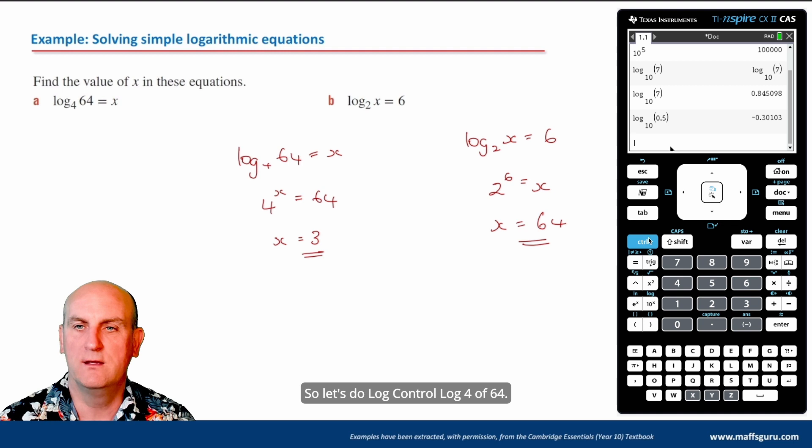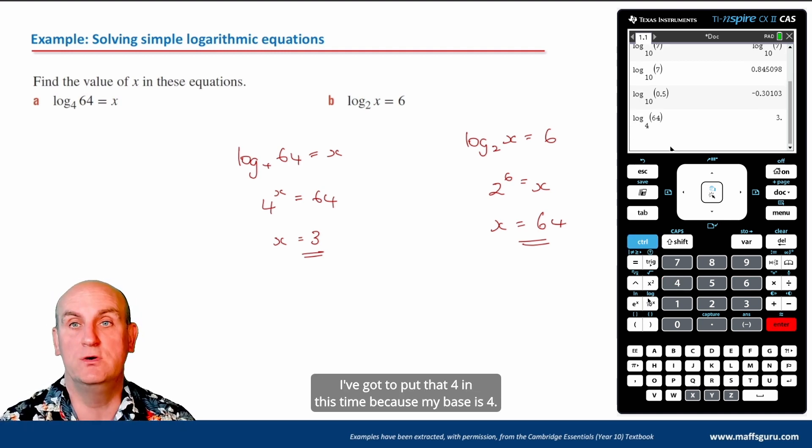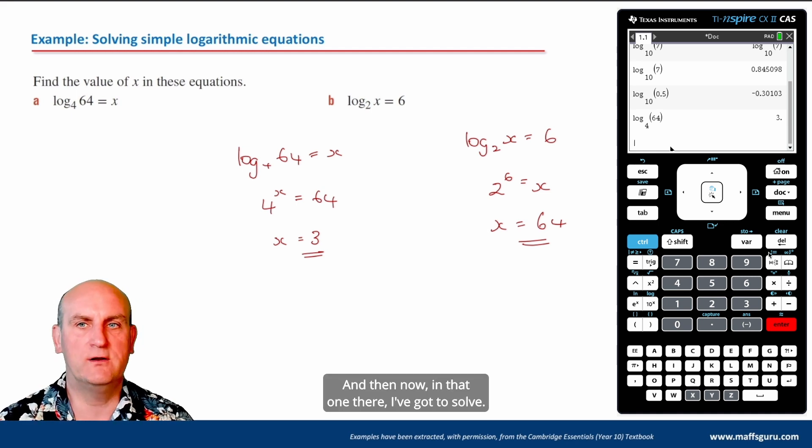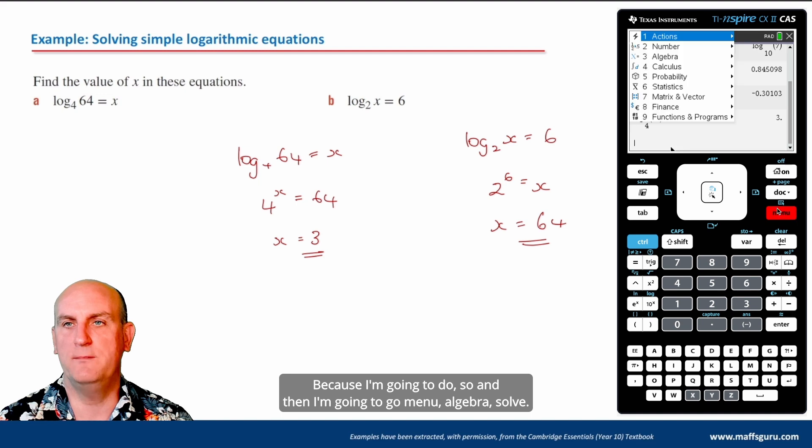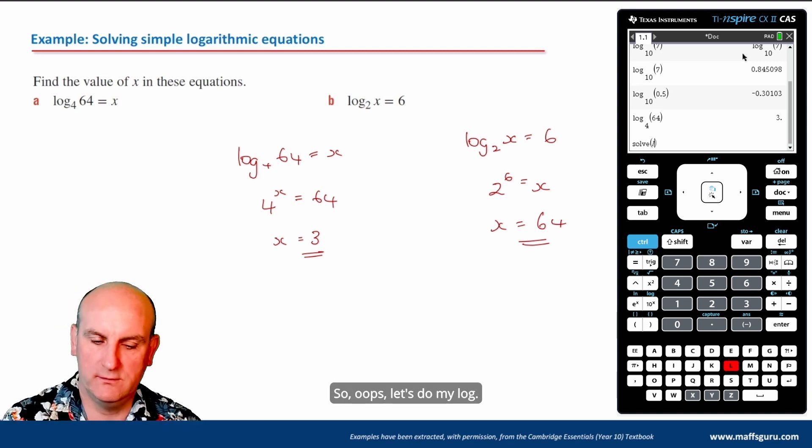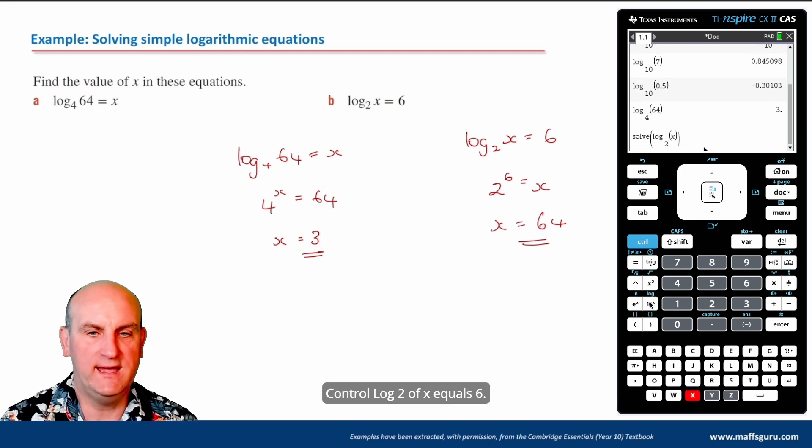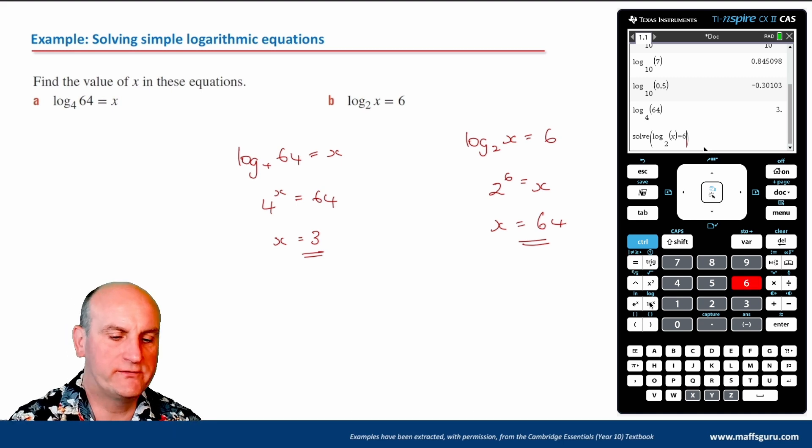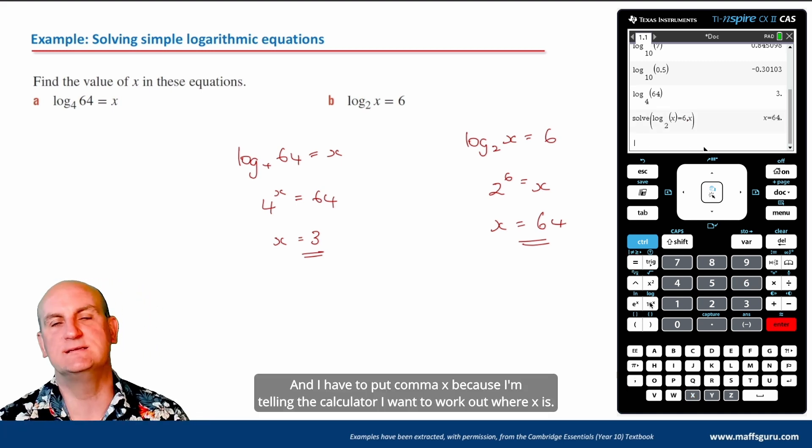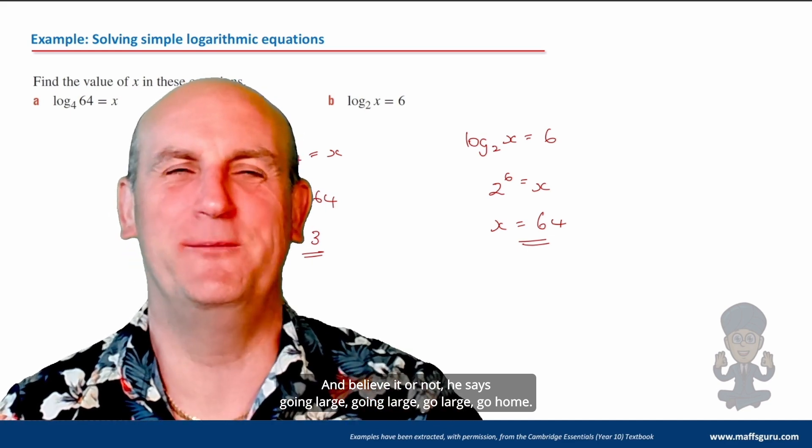So let's do log control log 4 of 64. I've got to put that 4 in this time because my base is 4. It gives me 3. And then now that one there, I've got to solve because I'm going to do menu algebra solve because they've given me an equation and I'm trying to find that value of x. So let's do my log control log 2 of x equals 6. I have to put comma x because I'm telling the calculator I want to work out where x is and x comes out to be 64.